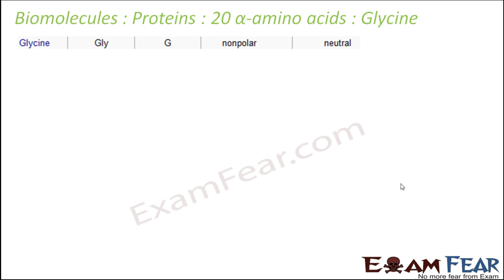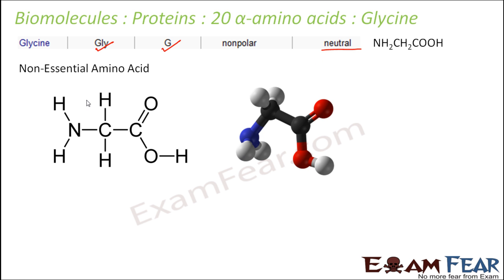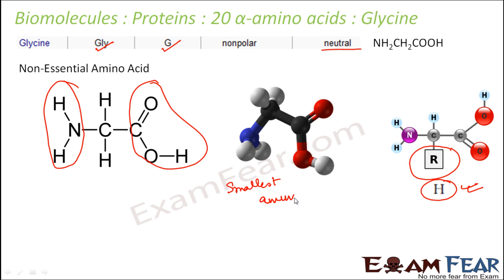Next is glycine. The three-letter symbol is GLY and the one-letter symbol is G. It is non-polar and neutral, making it a non-essential amino acid that can be synthesized within the body. This is how the structure looks like, with one amino group and one carboxyl group. Glycine is the smallest amino acid — its alkyl group is simply H, which is the smallest possible alkyl group.